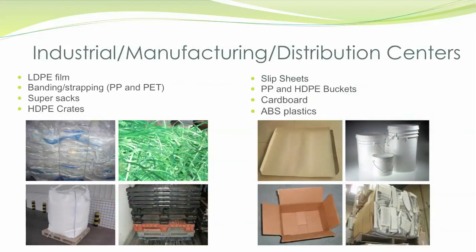Here are several examples of the various kinds of recyclable material that you'll find in typical plants and warehouses in this category. Notice that a majority of these materials are things you've probably seen in residential settings. Most everyone has received packages at home that have PET or PP plastic banding and bubble and stretch wrap. We know that residentially we cannot recycle these items. However, in large quantities, almost anything is recyclable.